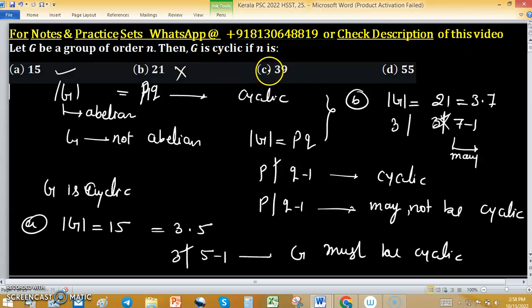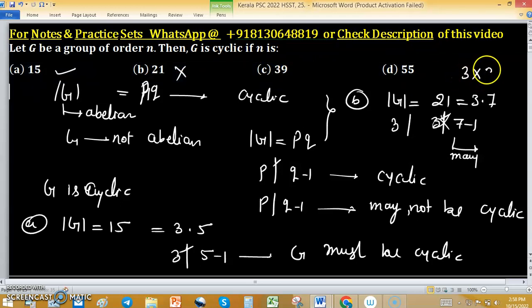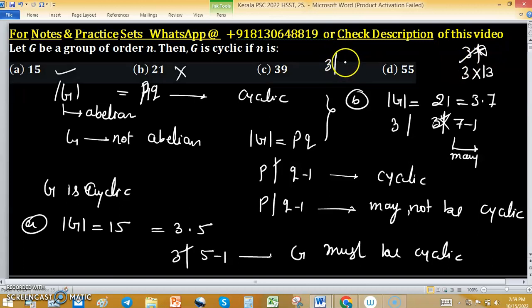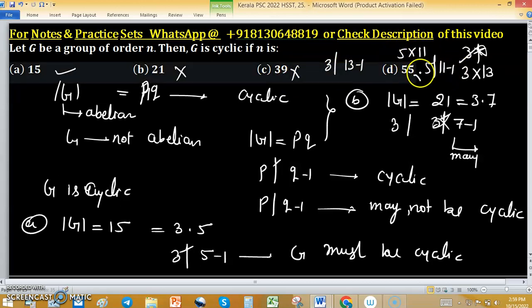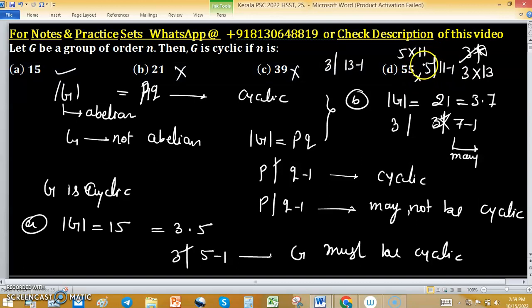In option C, 13 into 3. Order of group can be written as 13 into 3, but 3 divides 13 minus 1, so this is not. Similarly, 5 into 11, but 5 divides 11 minus 1. So all other possibilities are wrong. Only possibility in option A is correct.